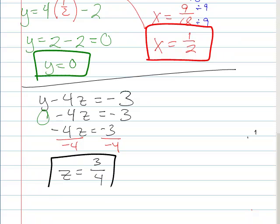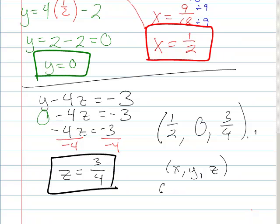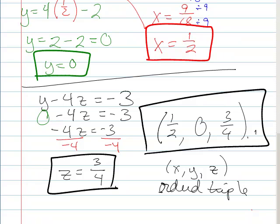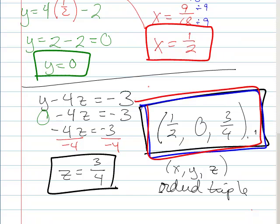So that's awesome. Z equals 3 fourths. So whenever I put all my answers together, I get 1 half, 0 and 3 fourths. That's my X, Y, Z ordered triple. So there's my fantastic answer that I will turn in. And if I tested those out, they would in fact have to satisfy all three of those original equations in my problem.